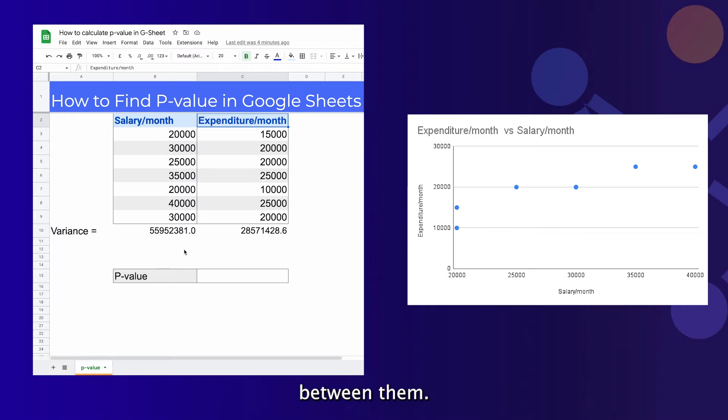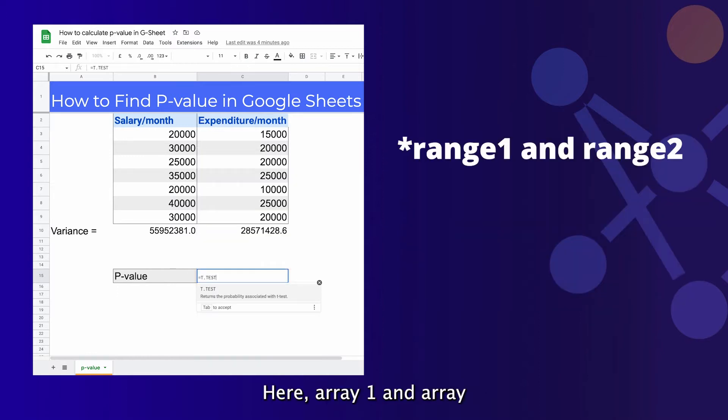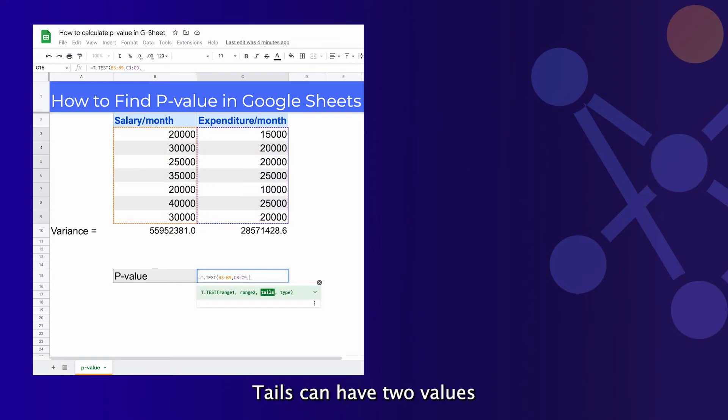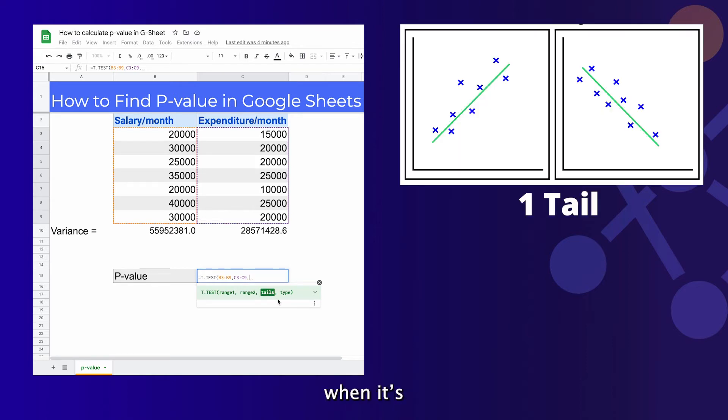The function goes like this: array 1 and array 2 refer to the two data ranges, so we'll select those now. Tails can have two values, one or two. We use one tail when it's obvious that the correlation could be positive or negative.